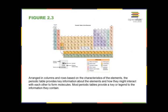Here is an example of a periodic table. Elements are arranged in columns and rows based on their characteristics. Looking at the groups going down, everything in a column has similar properties. In the center are the transition metals, which have different properties from the elements on the outside. Most periodic tables are color-coded to indicate the different categories of elements.